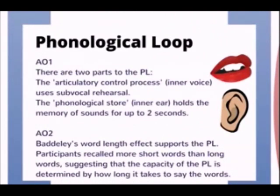The first of the slave systems is called the phonological loop, and there are two parts to this. The articulatory control process can be thought of as the inner voice, which uses sub-vocal rehearsal — mentally repeating information to yourself to stop you from forgetting it. The second part is called the phonological store, or inner ear, which can hold the memory of sounds for up to two seconds without rehearsal.